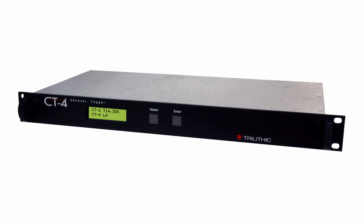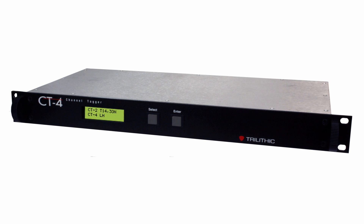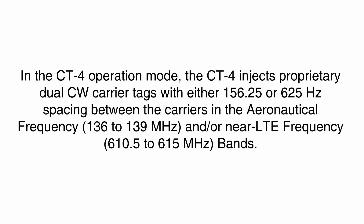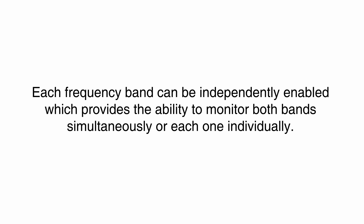This video will describe the initial configuration procedure for the CT4 channel tagger. In CT4 operation mode, the CT4 injects proprietary dual CW carrier tags with either 156.25 or 625 Hz spacing between the carriers in the aeronautical frequency and/or near the LTE frequency bands. Each frequency band can be independently enabled, which provides the ability to monitor both bands simultaneously or each one individually.